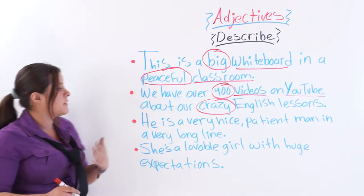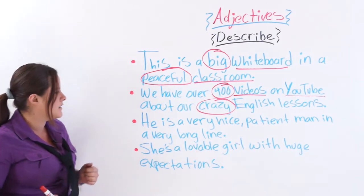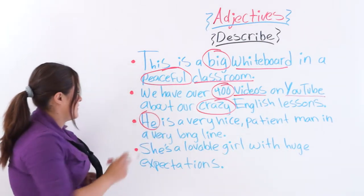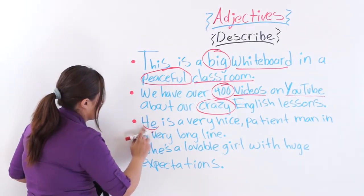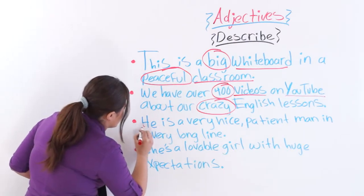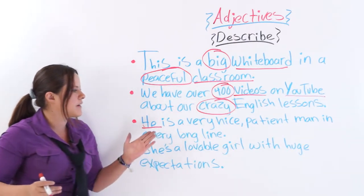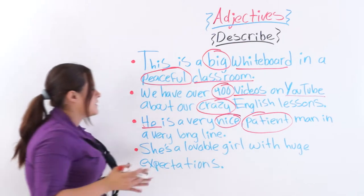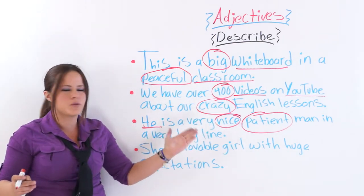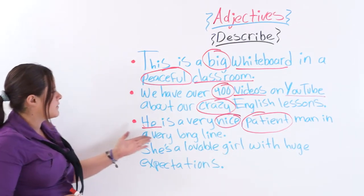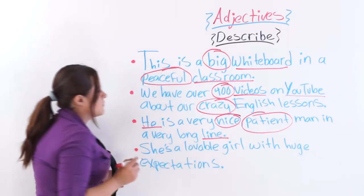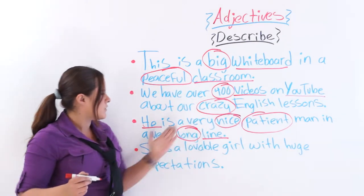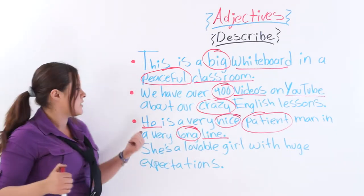The next example says: he is a very nice, patient man in a very long line. Here we have a personal pronoun — 'he' — which we're going to describe. He is a very nice and patient man. And 'long' describes the noun 'line.' So those are the three adjectives in this example.